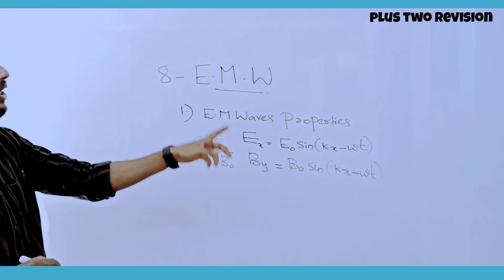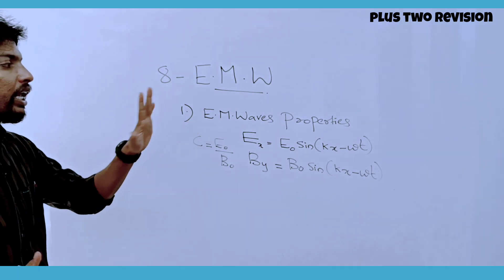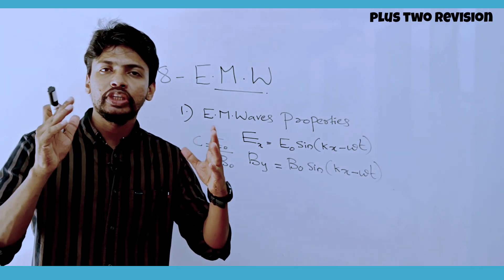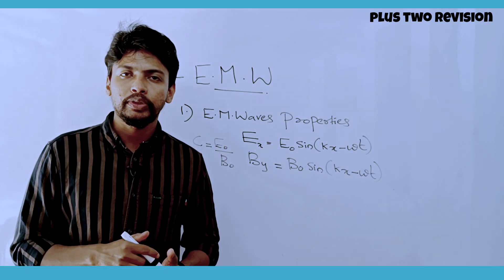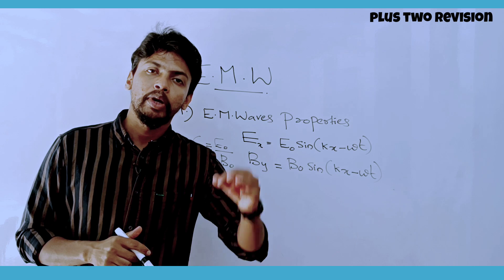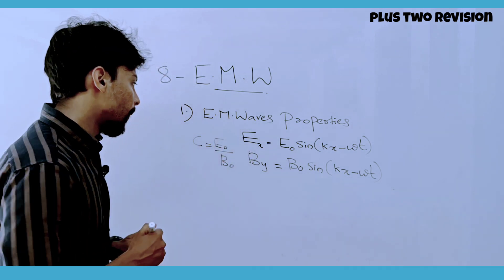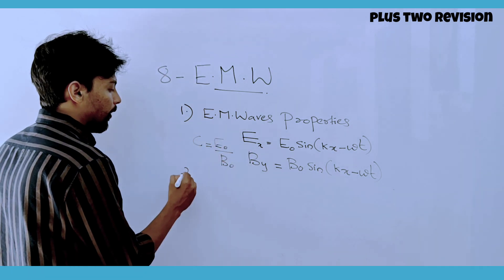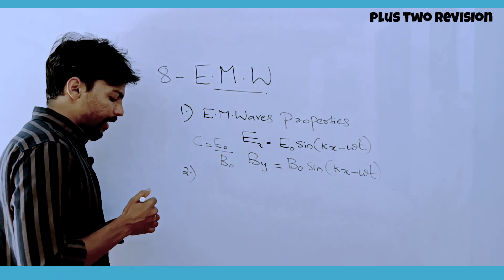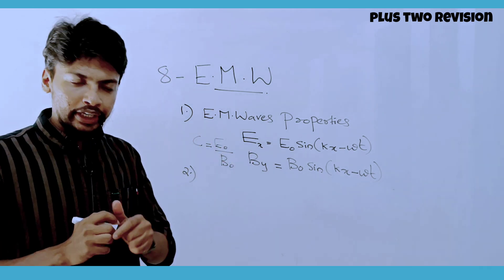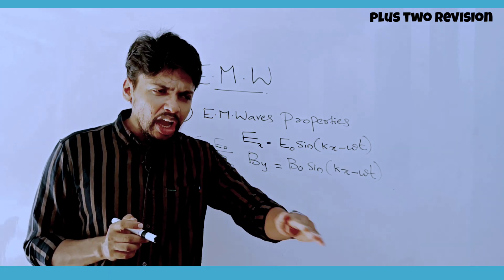The speed of light is E0 divided by B0. These two equations are the same equation. For each equation, electromagnetic waves behave accordingly.